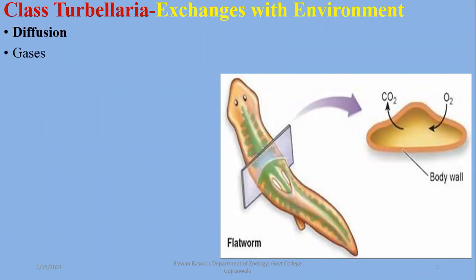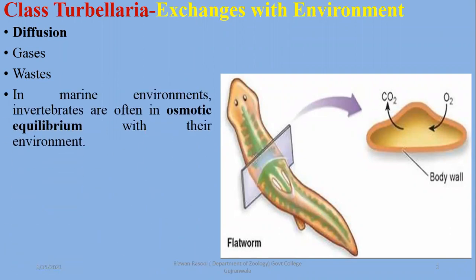In planaria or other turbellarians, there are no well-developed respiratory systems or other exchange systems. Mostly, substances are exchanged with gases and waste by diffusion. In the marine environment, turbellarians are osmotically in equilibrium.